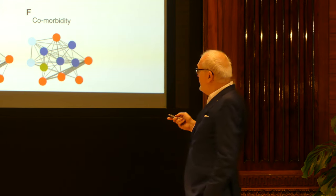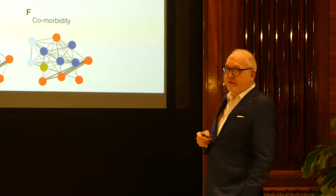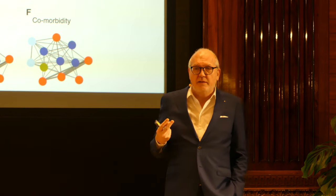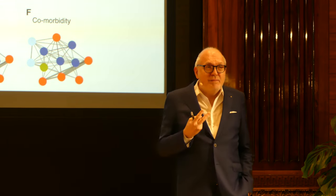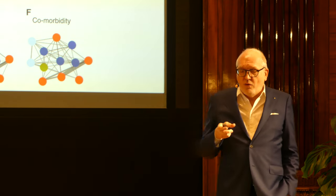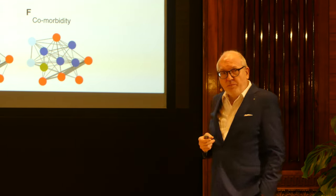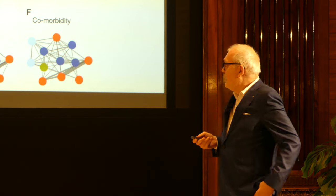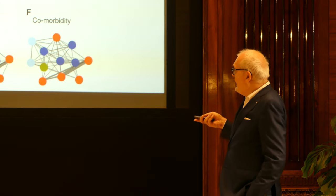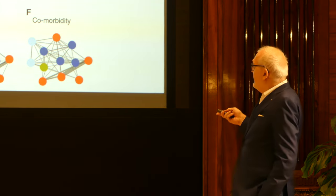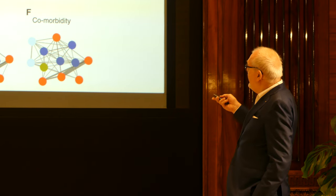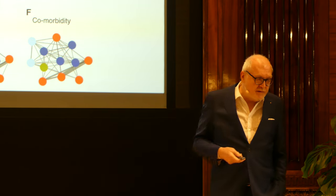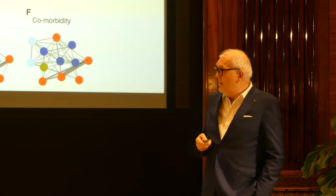And of course you can cluster diseases differently as well — for instance by comorbidity. If two diseases very often occur in the same patient, they may be the same disease; that's why they co-occur. Or if two diseases share the same symptoms, they may be the same disease. So you can make different disease networks, and we use this to validate that this is really a cluster — not only by genes, but also by comorbidity and by shared symptoms.